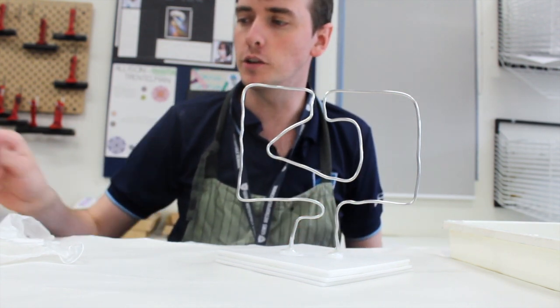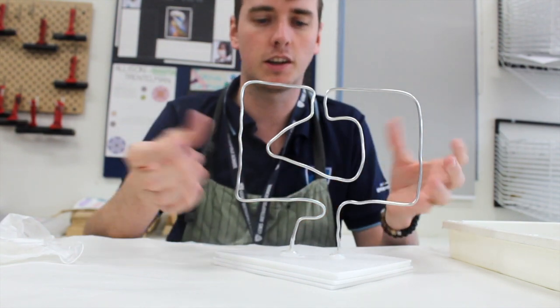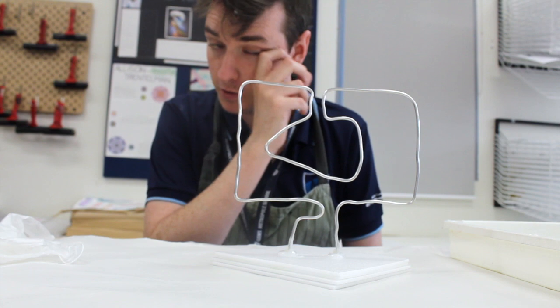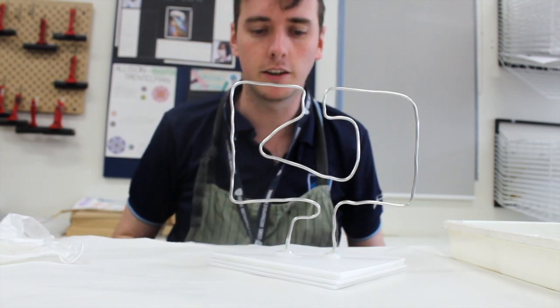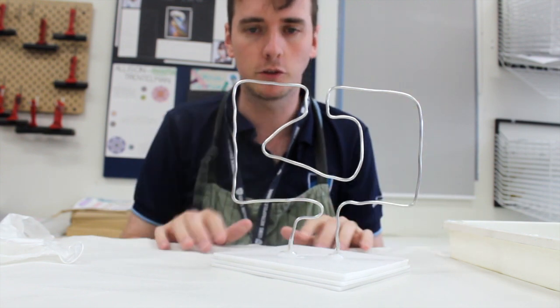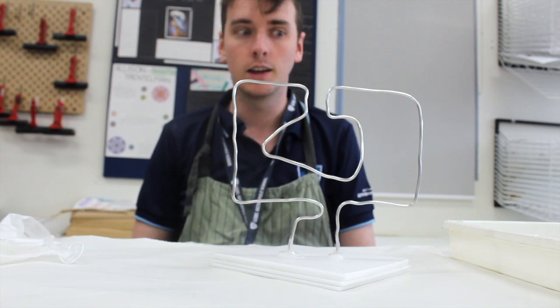So essentially what you do is you take that, you dip it into water and you can use it to mold a bit of plastering around something. So my step now that I want to go through is I want to go around and put a thin layer around all of this, which will hopefully smooth out some of the lumps and bumps.